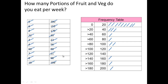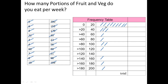We've entered all 20 pieces of information, so all our ticks are in. Now we count them up: 1, 2, 3, 4, 5, 6, 7, 8, 9 — we put in 9, then 3, 1, 1, 2, 1, 0, 1, 1, 1. We need to make sure we didn't lose any data items — there are 20 answers, so these should add up to 20. They do add up to 20, so the frequency table is complete.